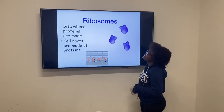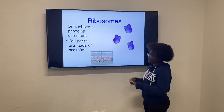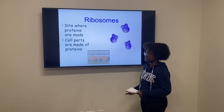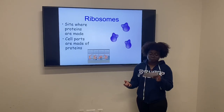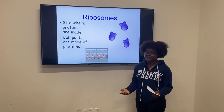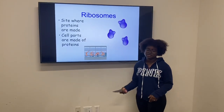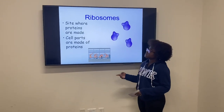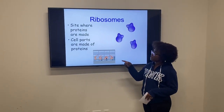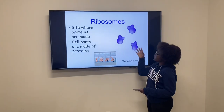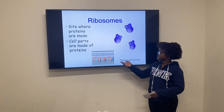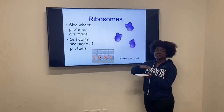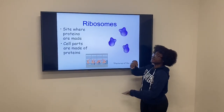Ribosomes are the site where proteins are made. Proteins build, maintain, and replace tissues within the body — not the tissues you blow your nose in, but the tissues that make up organs such as your lungs, heart, and kidney. Ribosomes are cell parts made up of proteins. Think of ribosomes as factories of the cell, like toy factories that get all these little parts and put them together to make one big toy.